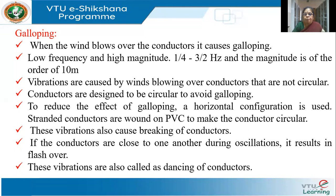Gallop means fast, long-distance oscillations. These are caused by winds blowing over conductors that are not circular. A perfect circular design can reduce or even avoid galloping totally. Another way of reducing the effect of galloping is to use a horizontal configuration. We have stranded conductors which are wound on PVC to make the conductor circular. These cause breaking off of the conductors because the magnitudes are high.